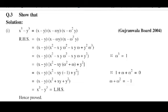Show that x cube minus y cube is equal to x minus y into x minus omega y into x minus omega square y. Taking right hand side, x minus y into x minus omega y into x minus omega square y.